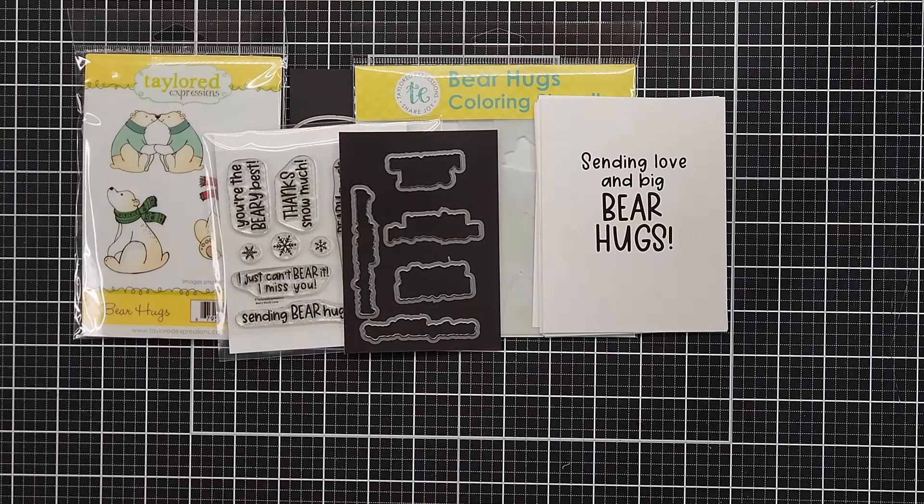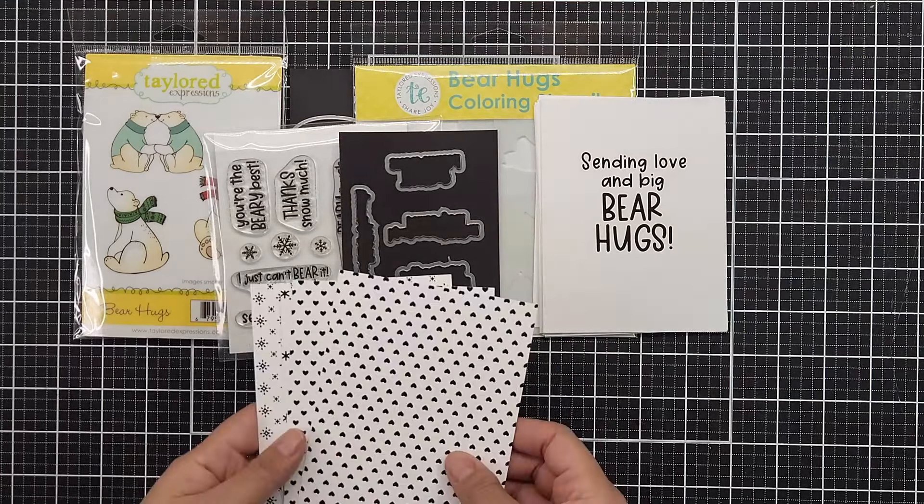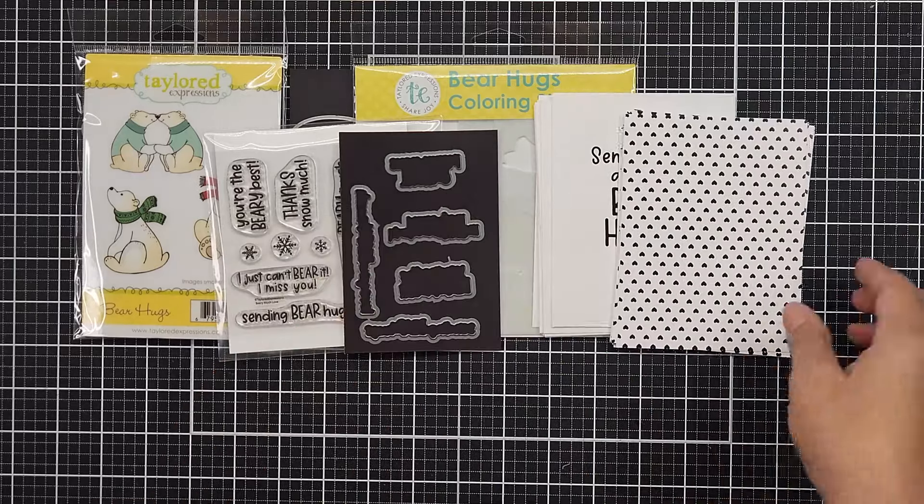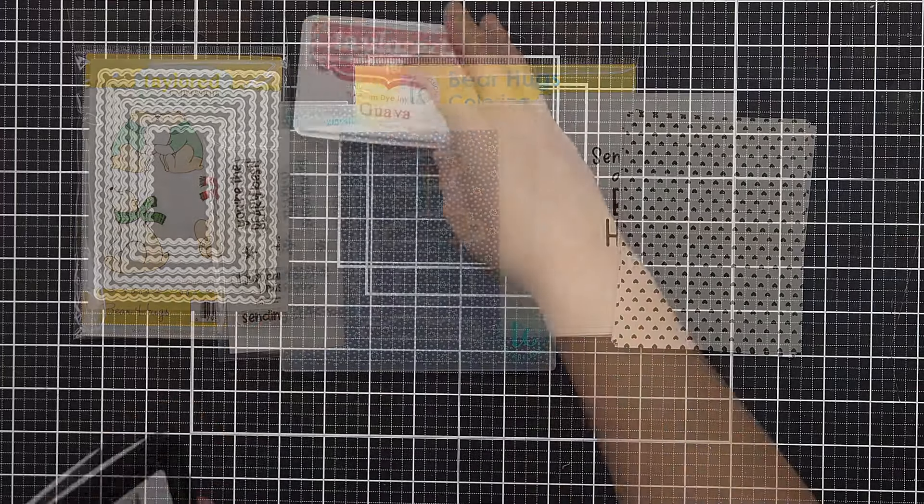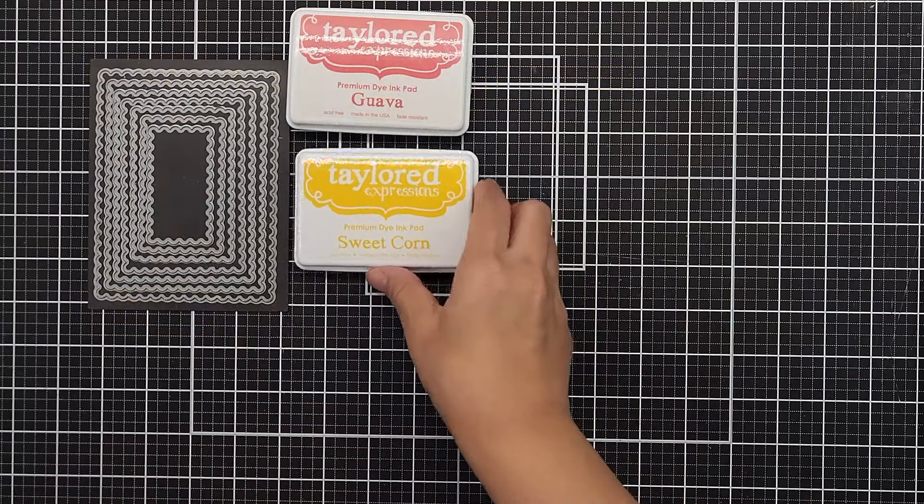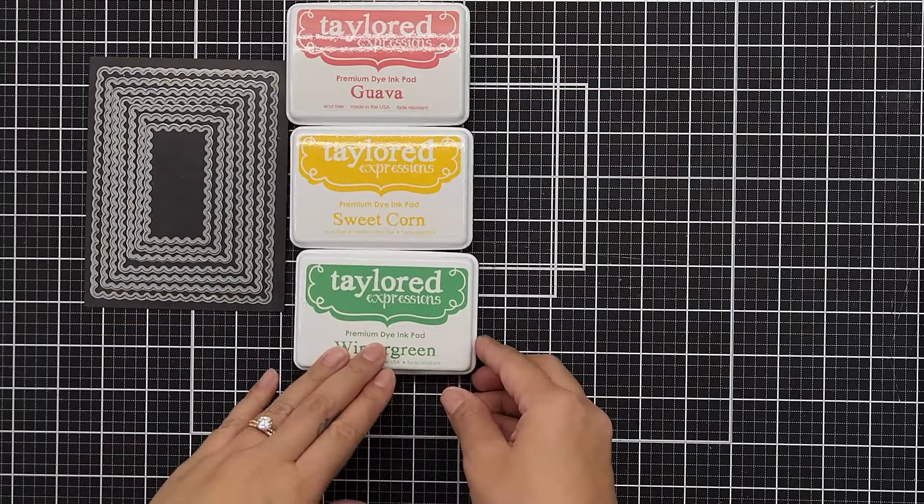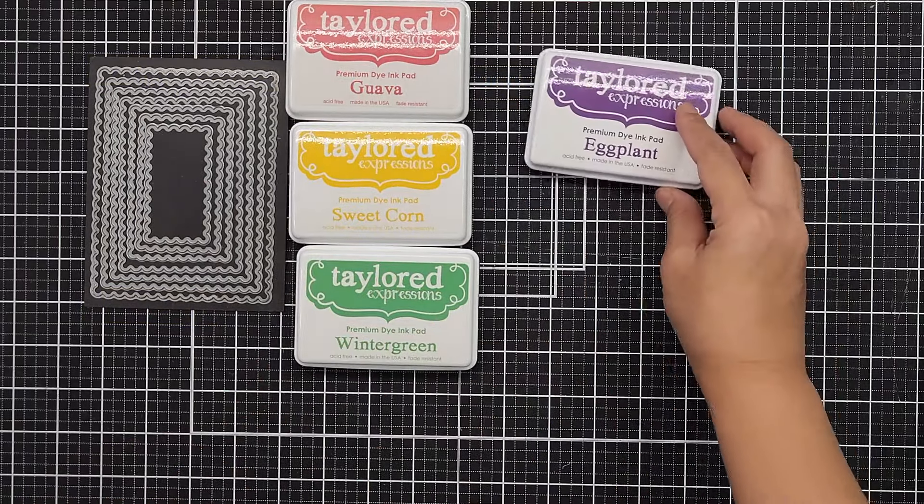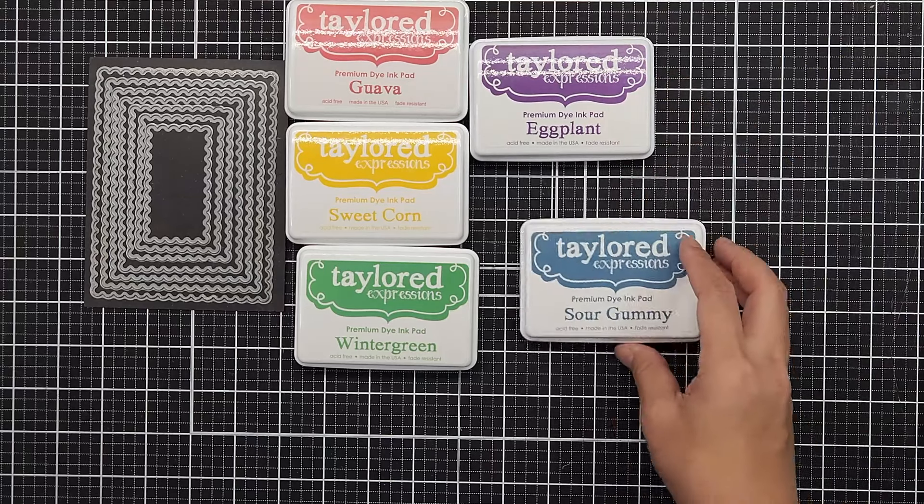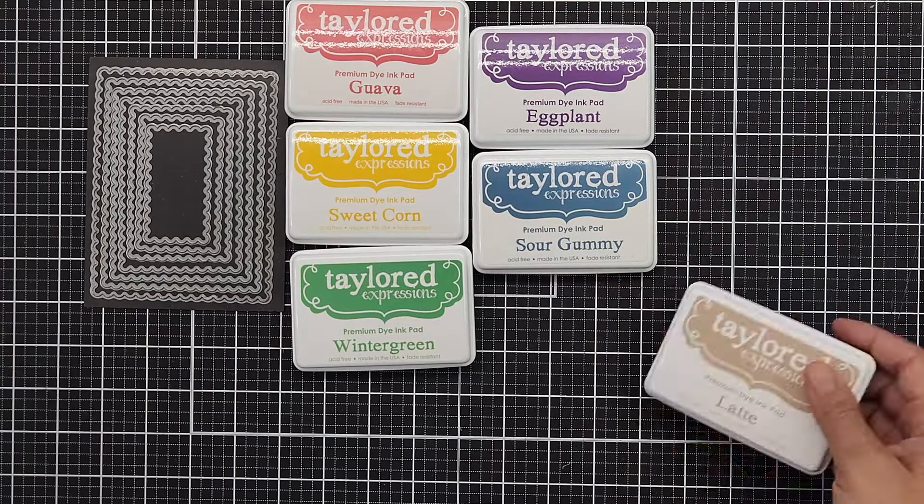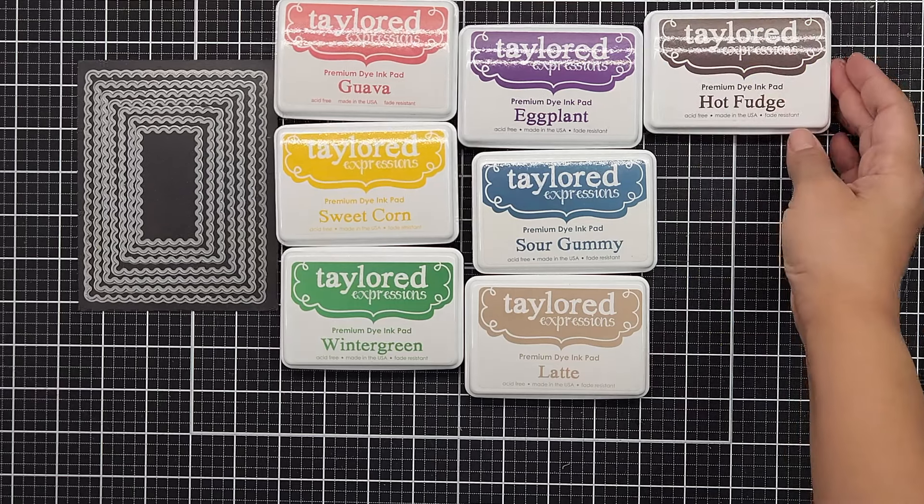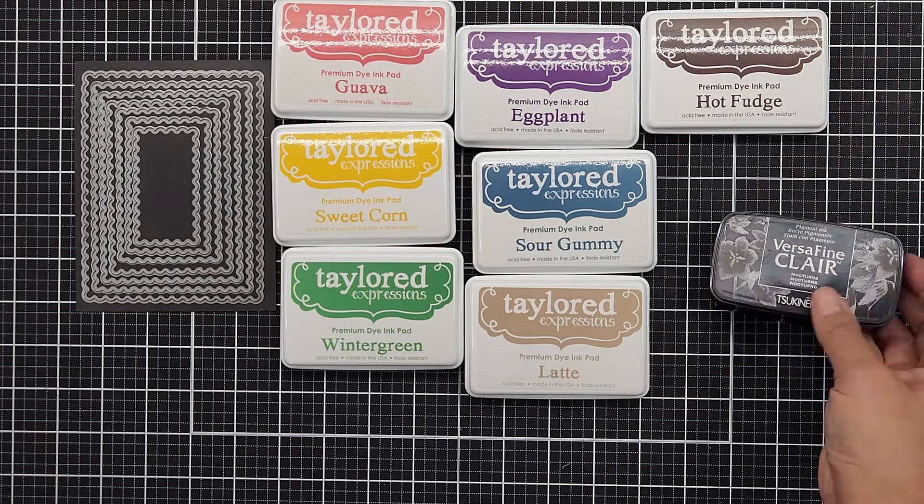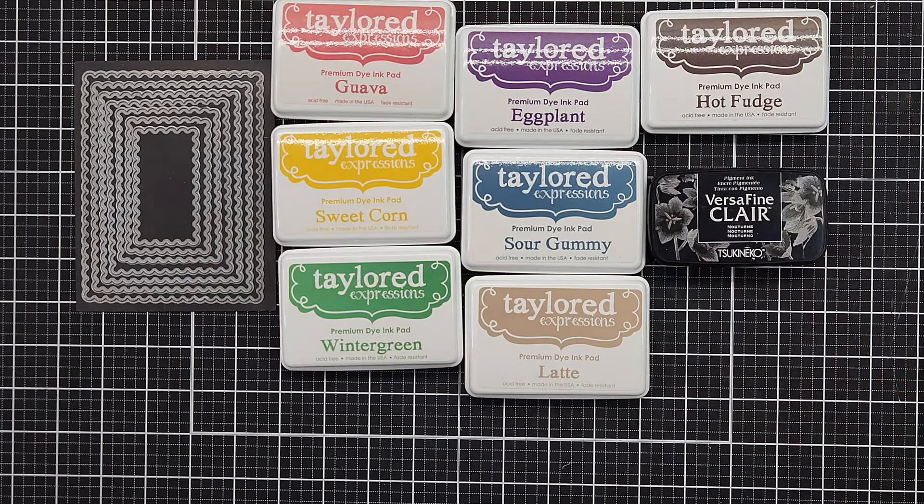I will also use products that are not included in the kit. I will be using the Foil It Bear Hugs and Tiny Twinkle embossing folder. For additional products I am using Petite Scalloped Rectangle Stacklets, ink pads in the colors Guava, Sweet Corn, Wintergreen, Eggplant, Sour Gummy, Latte, Hot Fudge, Toffee which is not on the screen, and VersaMark Clear ink.